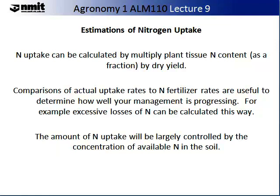You can also send off a sample for plant tissue nitrogen content and then multiply the fraction of nitrogen content by your dry yield, giving your total nitrogen plant uptake. Comparisons of actual uptake rates to your nitrogen fertiliser rates are useful as they enable you to determine how well your management practice is progressing. For example, excessive losses of nitrogen can be calculated using this method. The amount of nitrogen uptake will be largely controlled by the concentration of nitrogen available in the soil.